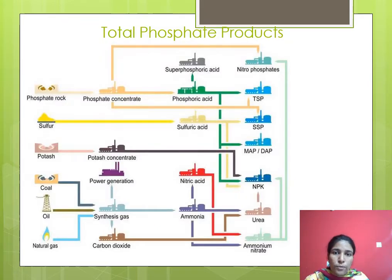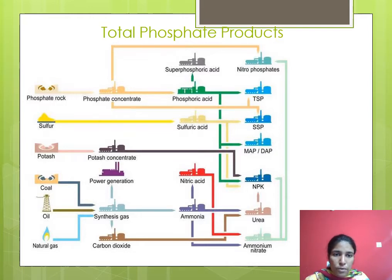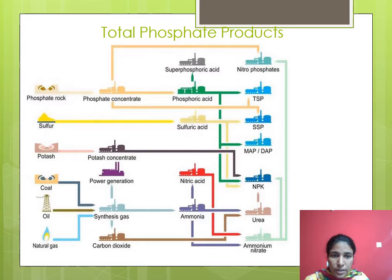The next topic is total phosphate products. In the diagram you can see different phosphate products and their raw materials, including sulfur, potash, coal, oil, and natural gas. From phosphate rock we get phosphate concentrate, and from that we get superphosphoric acid and phosphoric acid. From superphosphoric acid we get nitrophosphate. Using phosphoric acid and phosphate concentrate we get triple superphosphate (TSP). From sulfur we get sulfuric acid, and with sulfuric acid and phosphoric acid we get single superphosphate.